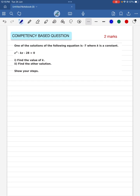One of the solutions of the following equation is minus 7 where k is a constant and the equation is z squared minus kz minus 28 equal to 0. Now find the value of k and find the other solution and you have to show your steps.